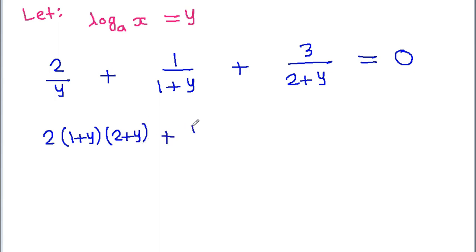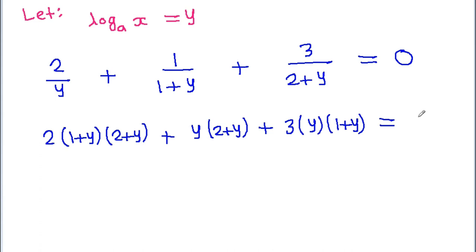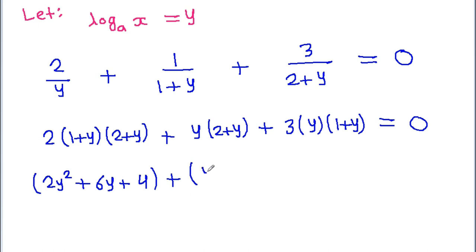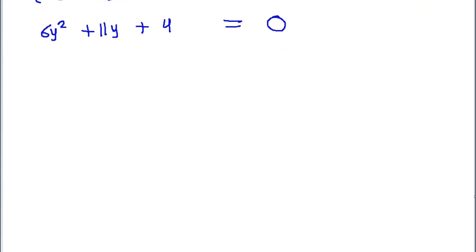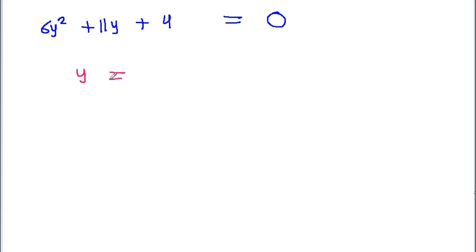Let y = log_a(x). The equation becomes 2/y + 1/(y+1) + 3/(y+2) = 0. Multiplying through, we get the quadratic 6y² - 11y - 4 = 0.